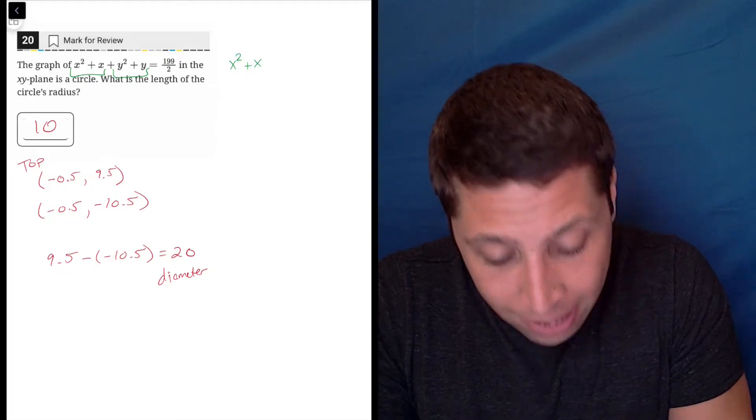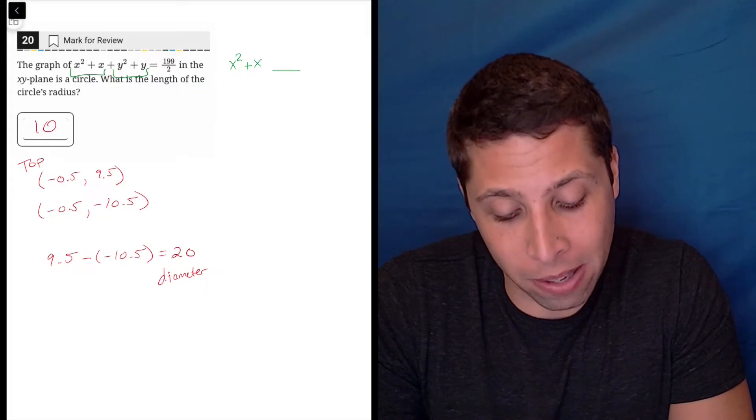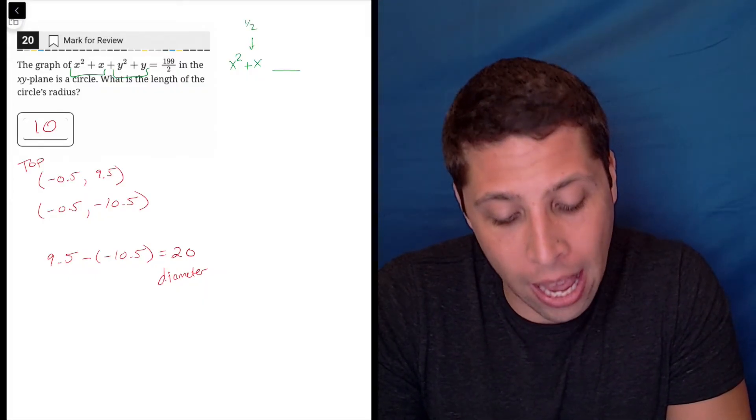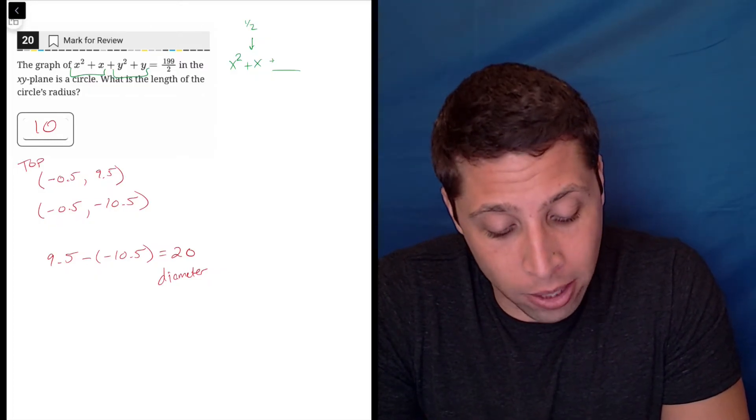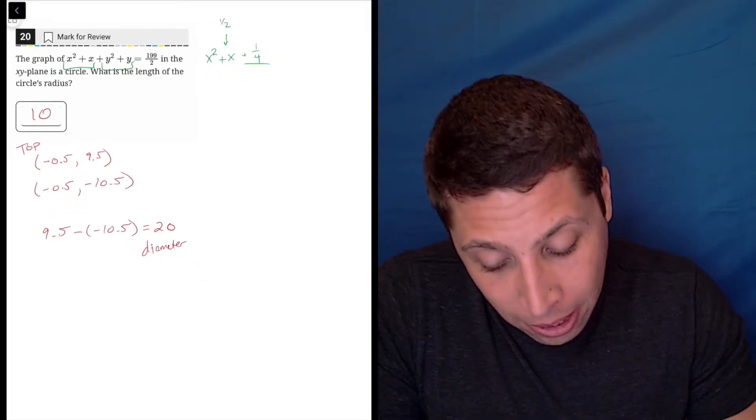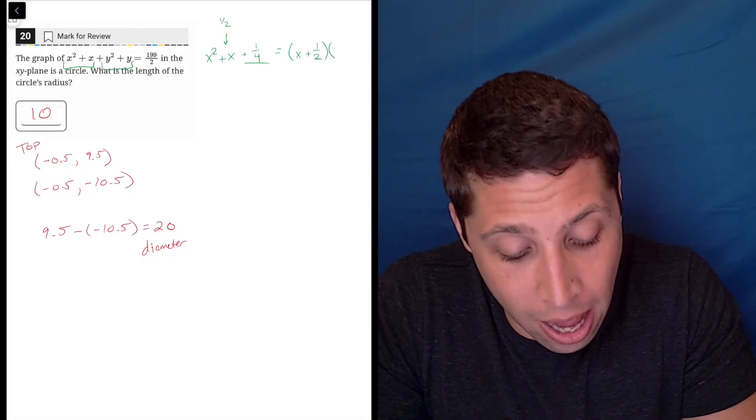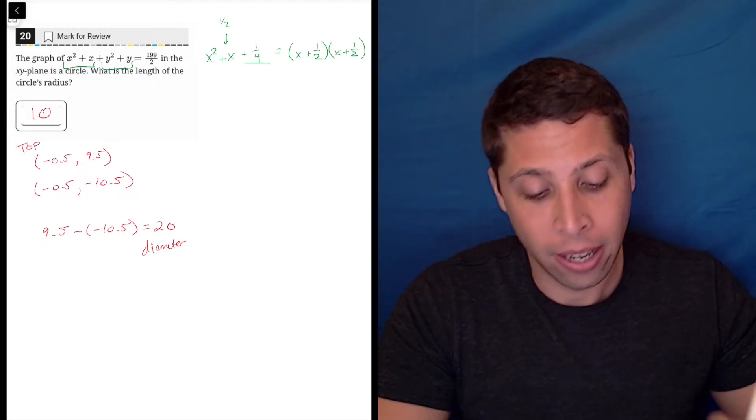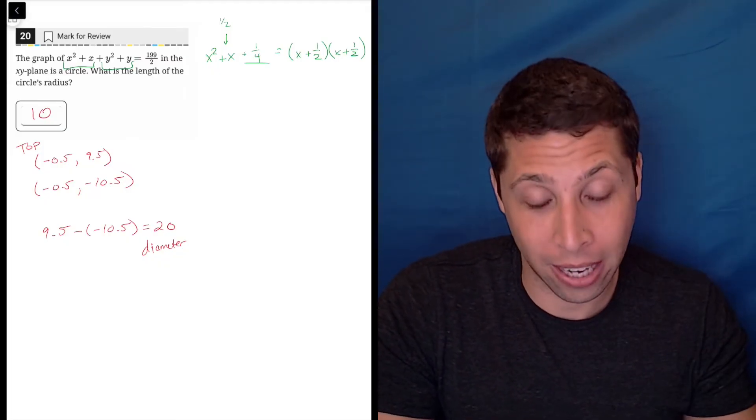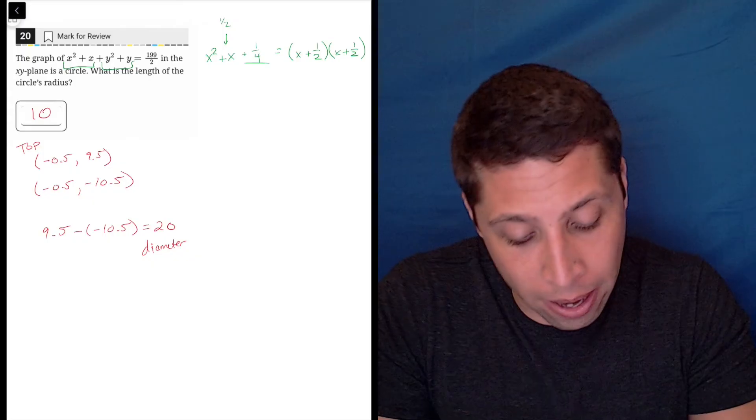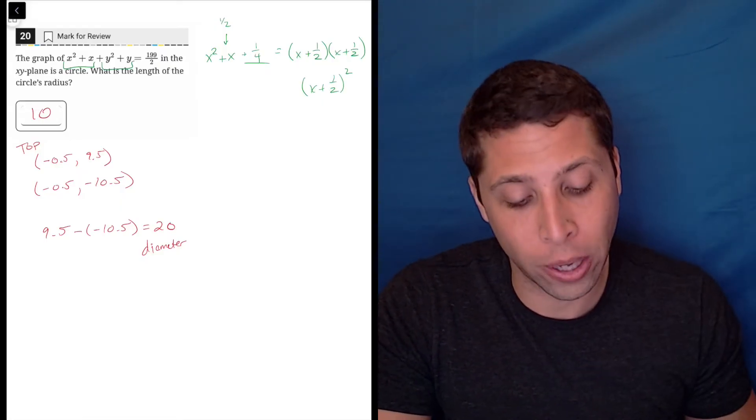So what we're supposed to do is focus on the two components and try to turn them into squared terms. So the x squared plus x, I need to find a number to add that's going to make this so that I can factor it. So basically the rule is you take half of the b term and square it. So half of one is half and then square it. So that should be plus one fourth. And that lets me, if I wanted to then factor this, it would be x plus a half times x plus a half.